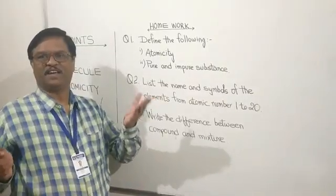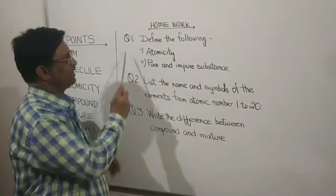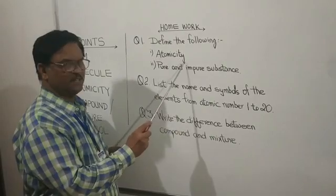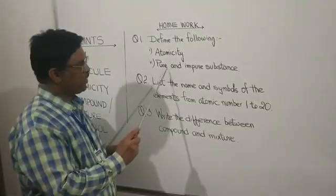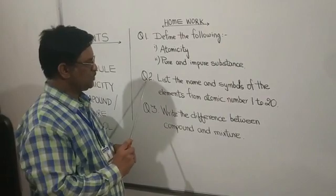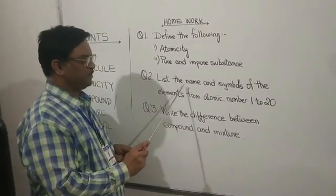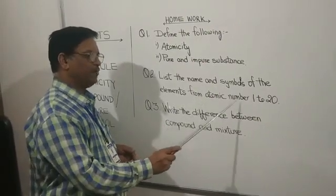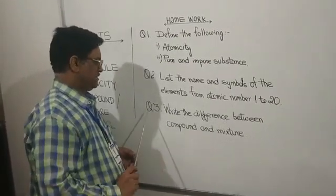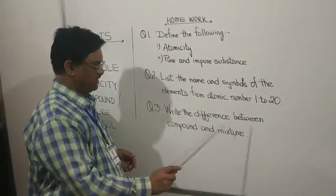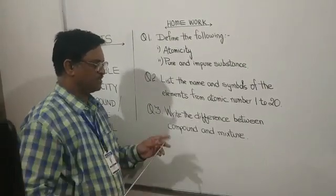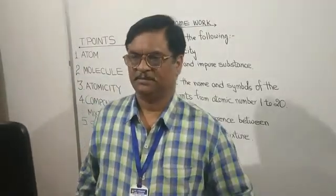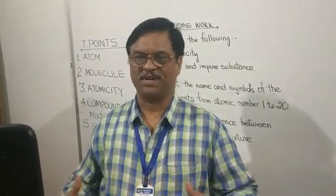Here is homework for you. Question one: define the following — atomicity, and pure and impure substances. Question two: list the names and symbols of elements from atomic number one to twenty. Question three: write the difference between compound and mixture. Read the chapter thoroughly and write the correct answers, because we are going to assess you.